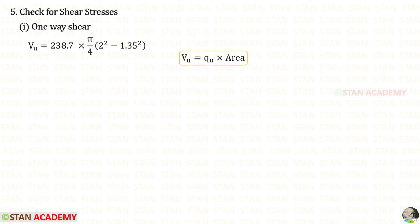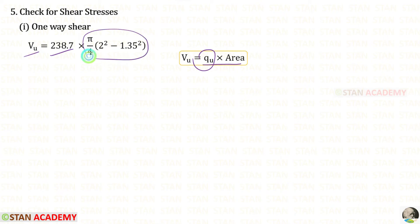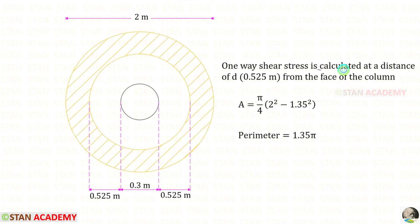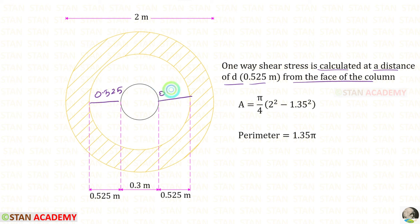Now we check for shear stresses. First, let us check for one-way shear. One-way shear stress is calculated at a distance D, the effective depth, from the face of the column. This distance is 0.525 m on each side. With the column diameter of 0.3 m, adding all distances we get 1.35 m.